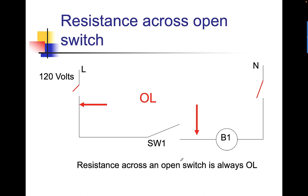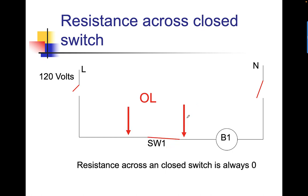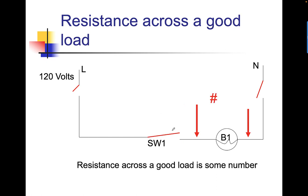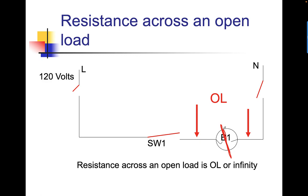Resistance across an open switch is going to show OL or infinite — there's no way for any current to pass across that open switch. Resistance across a closed switch is always going to be zero. Resistance across a good load is going to be some number. Resistance across an open load is going to be OL or infinite.